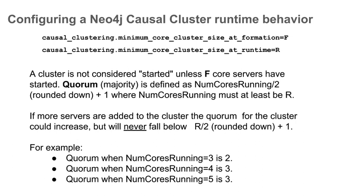A best practice is to use the same number for both these settings. In this presentation, you will see how a cluster's fault tolerance is managed. Quorum is defined as the majority of core servers. Quorum needs to be maintained in a cluster so that core servers can vote for a leader and can also vote out core servers that have failed or lost their network connection. A leader is required for a cluster to be operable for updates.